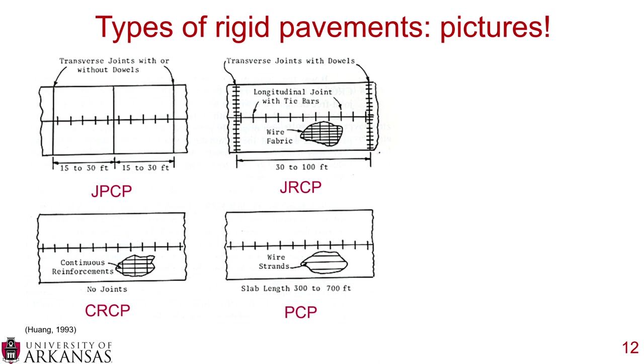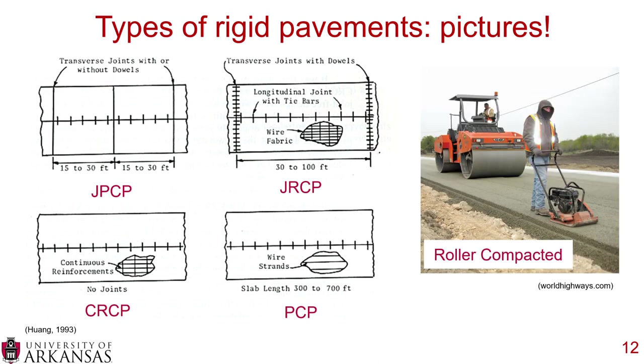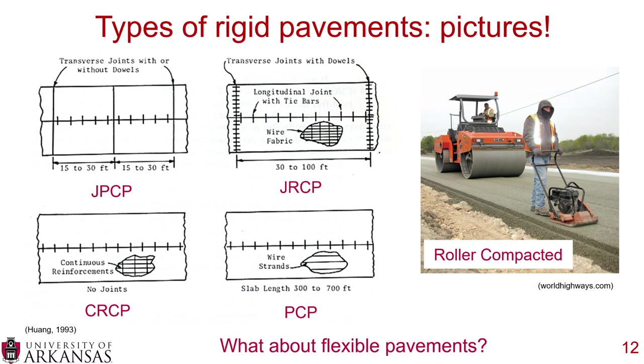Roller compacted concrete is a special type of mix that requires rollers on site to compact it. For flexible pavements, conventional flexible pavements consist of a series of different flexible material layers.